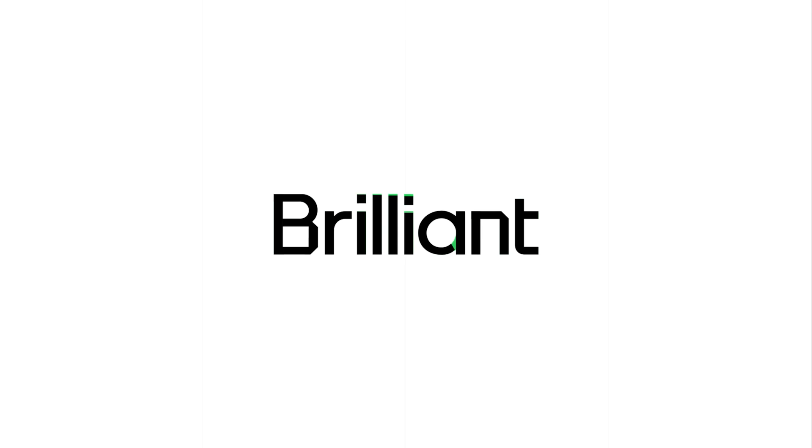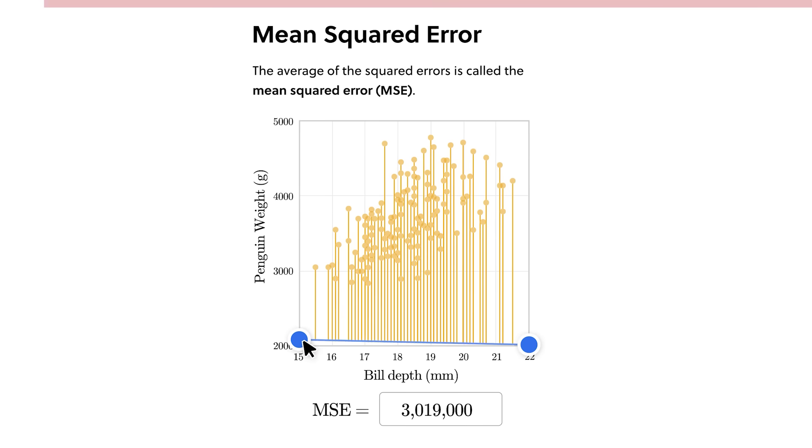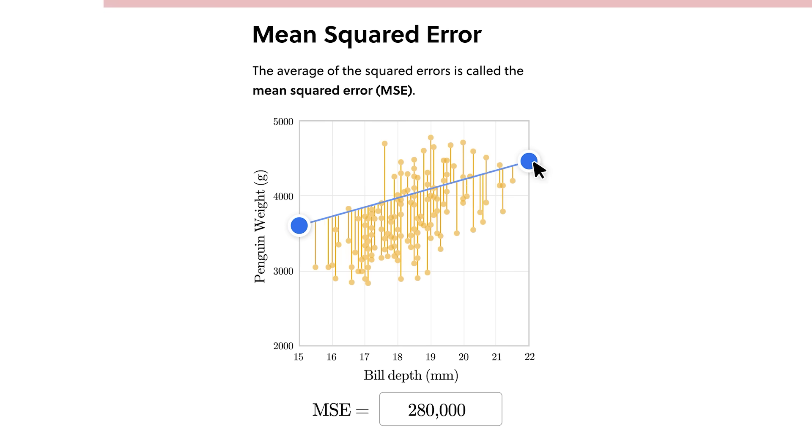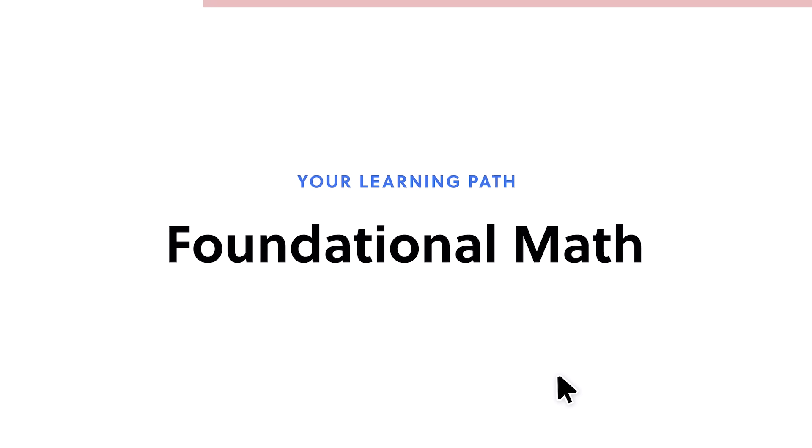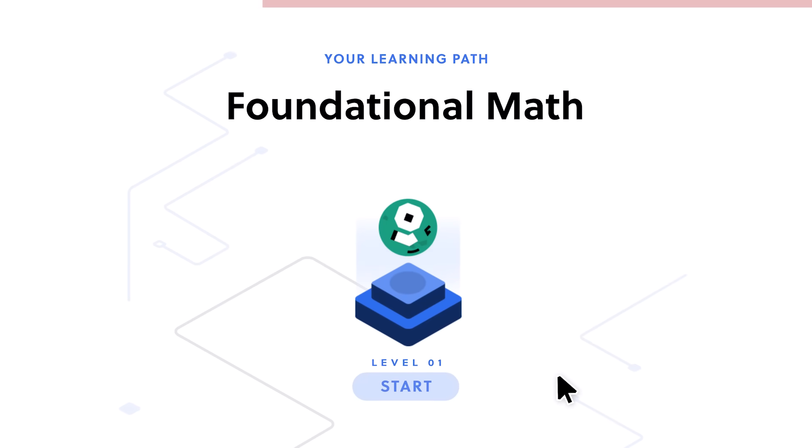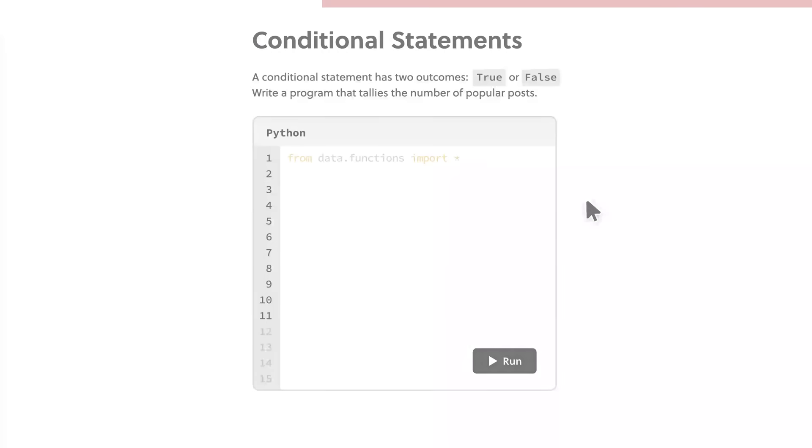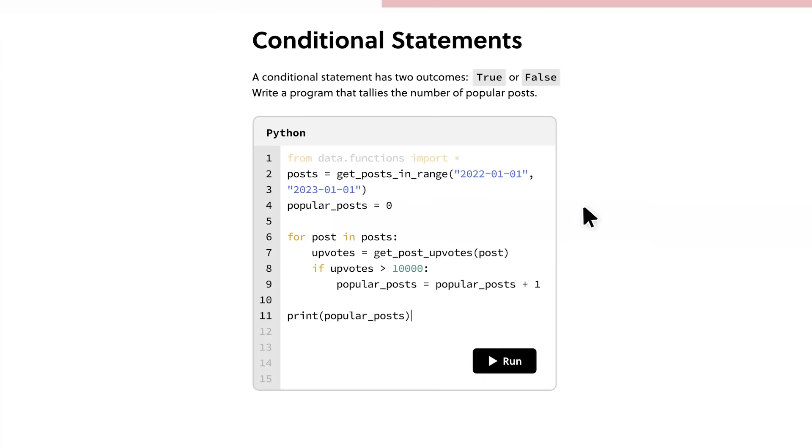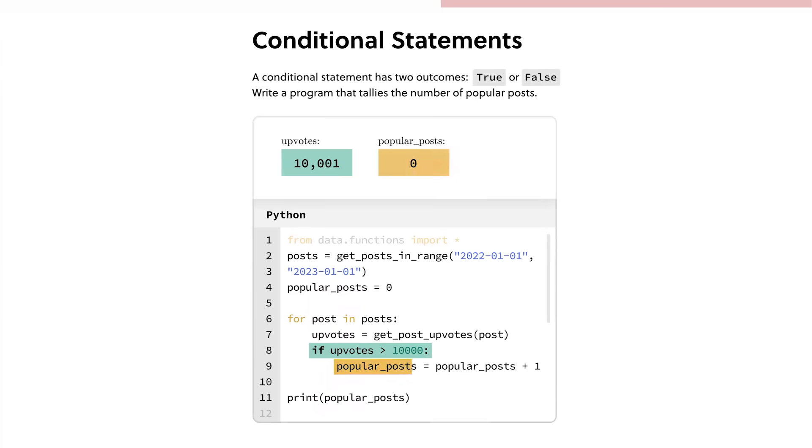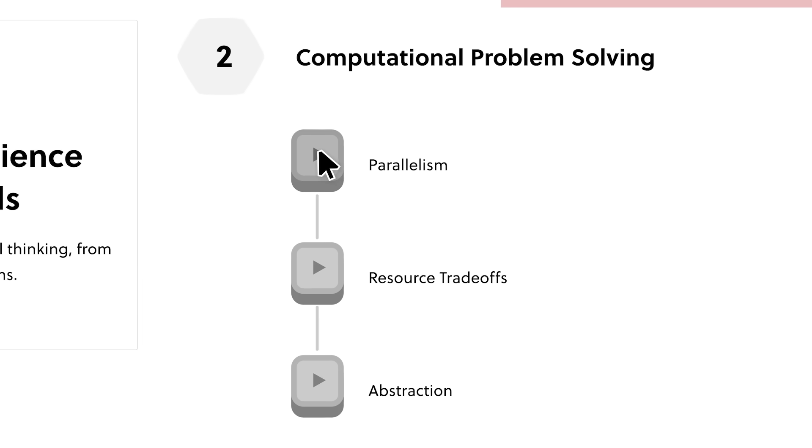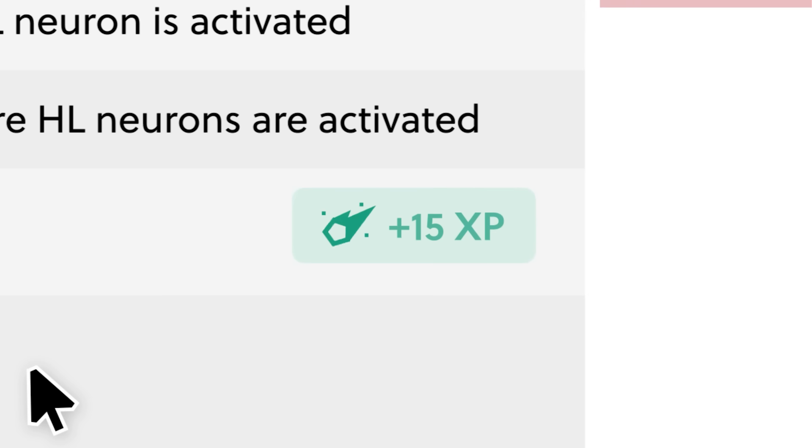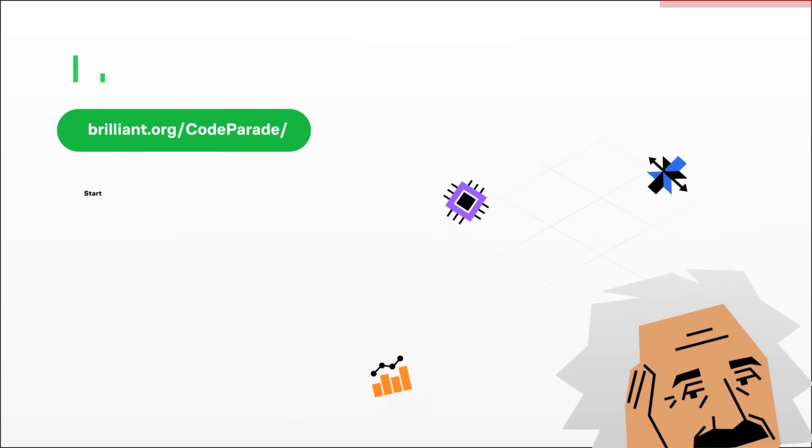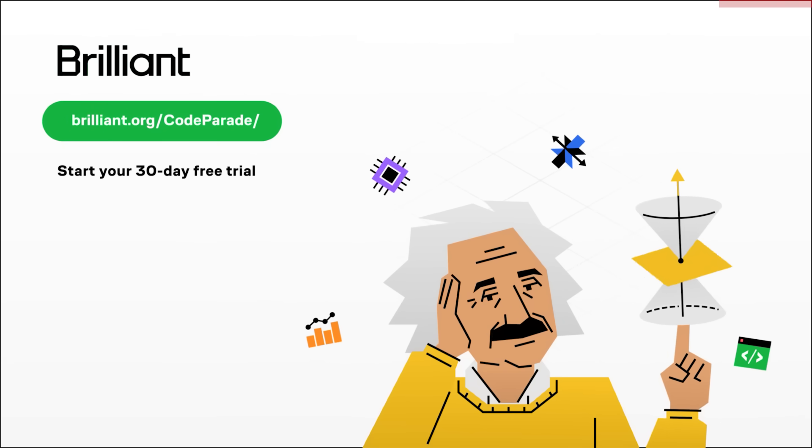But first, today's sponsor, Brilliant. Brilliant is where you learn by doing, with thousands of interactive lessons in math, data analytics, programming, and AI. Brilliant is uniquely effective to help teach you difficult subjects from the ground up. Build your critical thinking skills through problem solving, not memorizing. I really enjoyed their Programming with Python course. With so many interactive examples, Brilliant makes it really fun to learn, with bite-sized lessons you can do every day, whenever you have time. To try everything Brilliant has to offer for free for a full 30 days, visit brilliant.org slash code parade, or click on the link in the description. You'll also get 20% off an annual premium subscription. Thanks Brilliant!